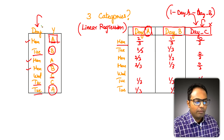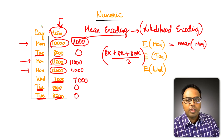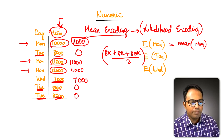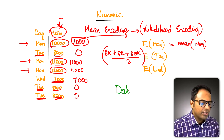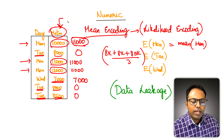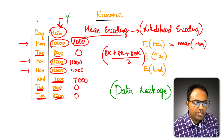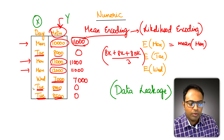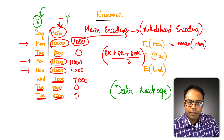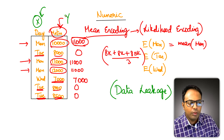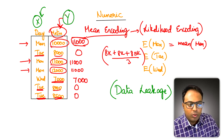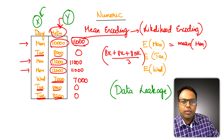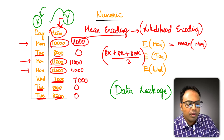One known problem with this approach when used for feature encoding in machine learning is that it causes what is called data leakage. In machine learning we use x to predict y. But here we are using the y data to encode the values of x — we are looking at the answers and bringing information from those answers into x.